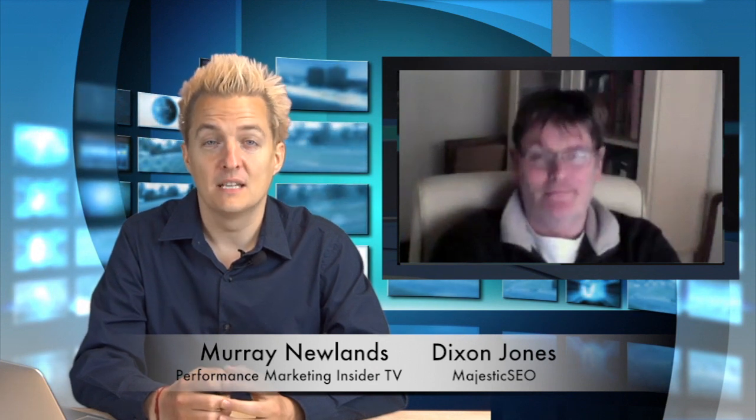Hello, I'm Murray Newlands. Welcome to another episode of Performance Marketing Insider TV. I'm here today with Dixon Jones from Majestic SEO. Majestic SEO is a tool which you can use to find affiliates, find out link patterns. It's the biggest link map that's available. You can use it to find out who's linking to your sites and what links are coming into your site and how to use that to optimize your search engine optimization.